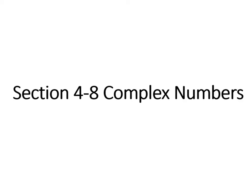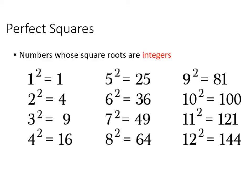In this video you will learn about section 4-8: imaginary and complex numbers. To review, perfect squares are numbers whose square roots are integers — numbers such as 1, 4, 9, 16, 25, 36, 49, 64, 81, 100, 121, and 144.